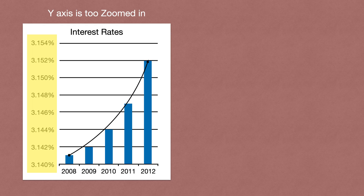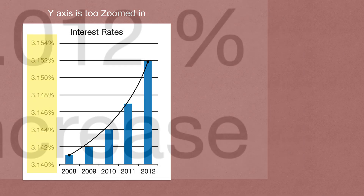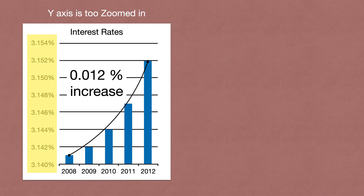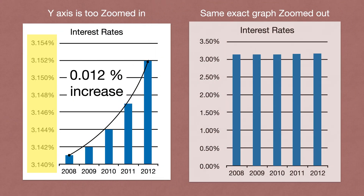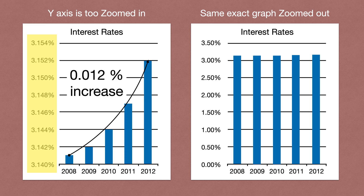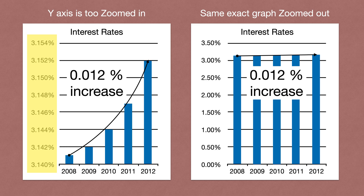It makes the graph look like it's increasing a ton, but really from 2008 to 2012, interest rates only increased 0.012%. Now looking at the same graph with a zoomed-out y-axis going up by 0.5% instead of 0.002%, notice how much smaller the increase looks — but it is the exact same 0.012% increase. This is a much more realistic interpretation.